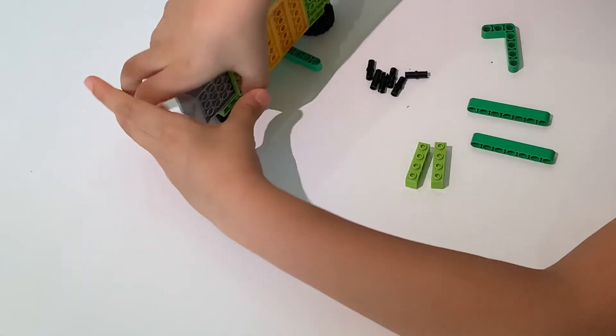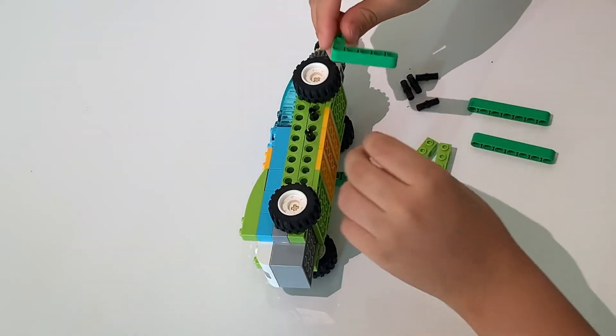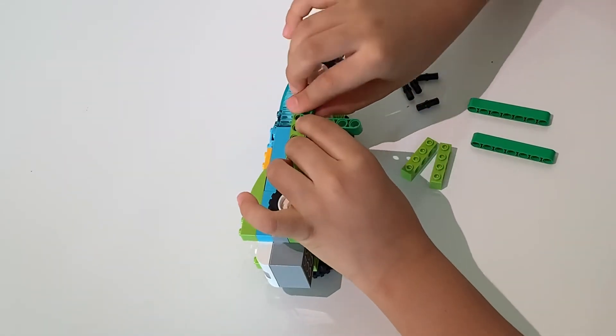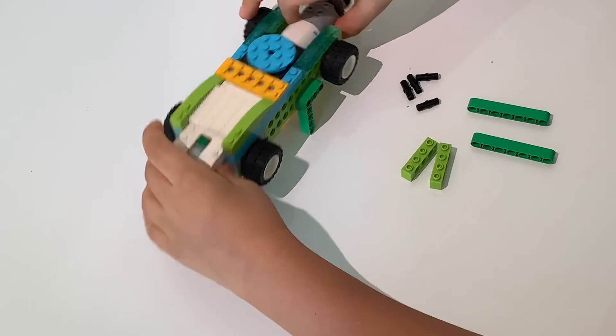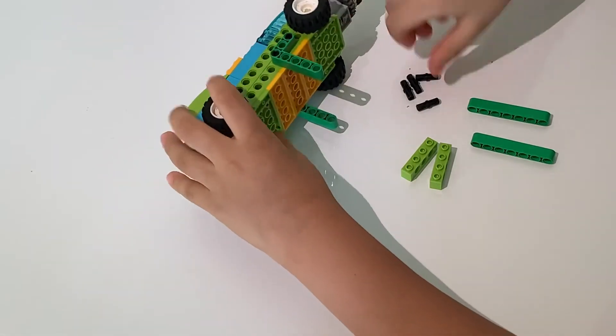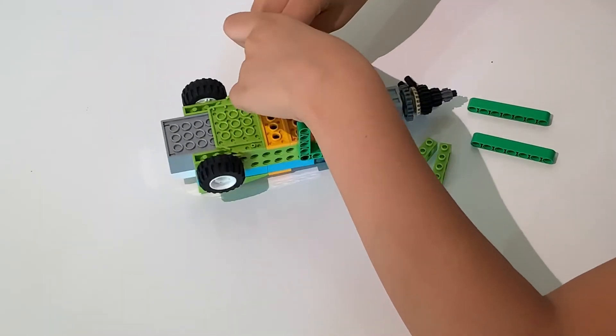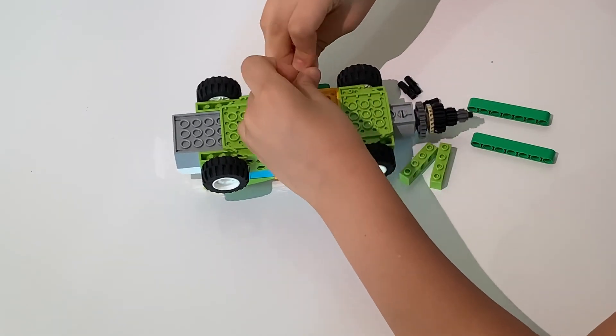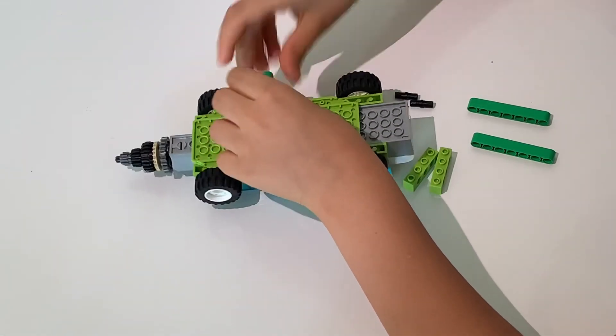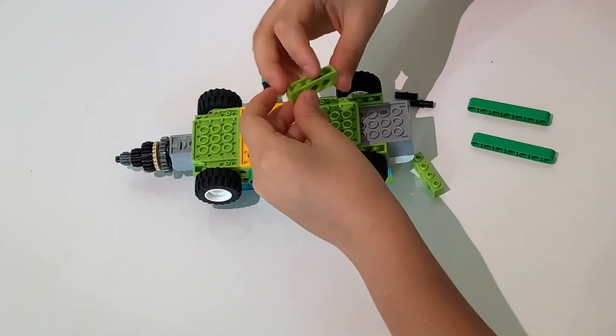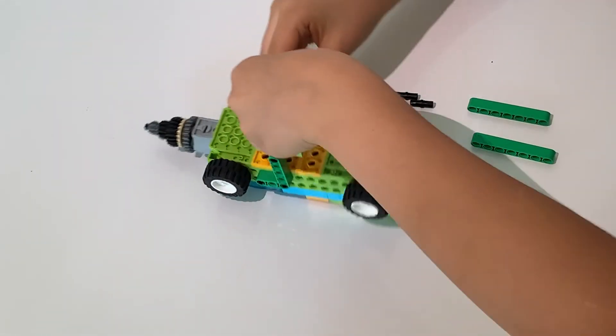And now, do the same thing on the other side. And now, a green piece here with the black pieces. And now, we're going to make something sustain. As you see, it's round and it won't really hold. So, we're going to grab more of these black pieces. One of these black pieces here. And another one on the other side here. Now, these green blocks, four dots long. One here. And another one here.